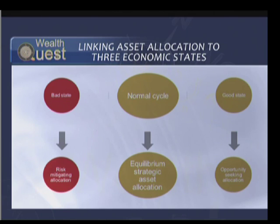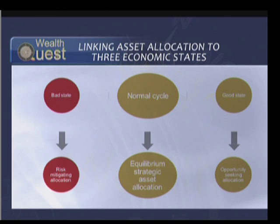The framework we've developed is a very simple one. We have a bad state, which is linked to what we call a risk mitigating asset allocation framework. We have a normal state — normal sailing conditions — which the industry would recognize as being the long-term strategic asset allocation framework. On the upside, we've got the opportunity-seeking state, which we call the opportunity-seeking asset allocation framework. So you've got three different states of the economy and three asset allocation frameworks that match how you would position the client's portfolio in each of those states.